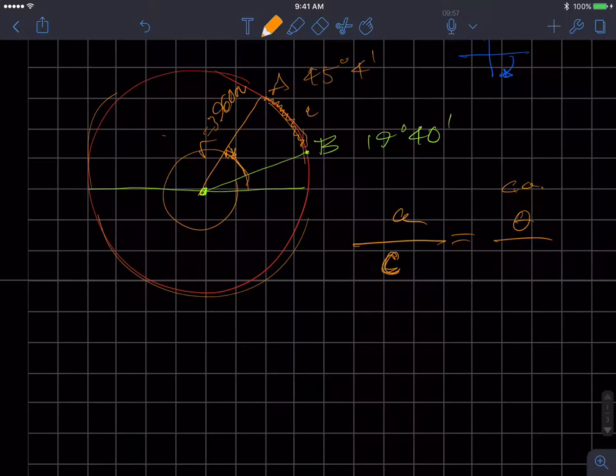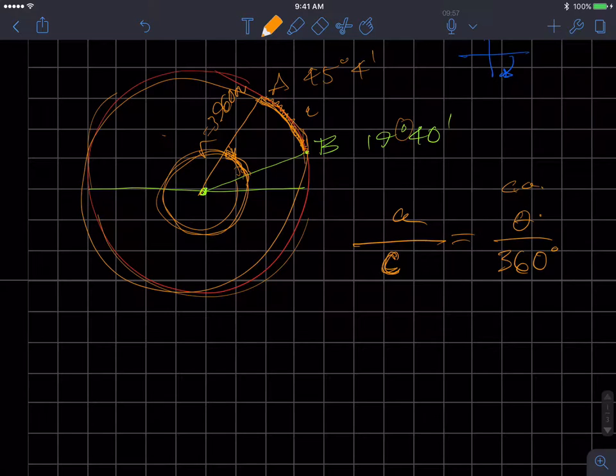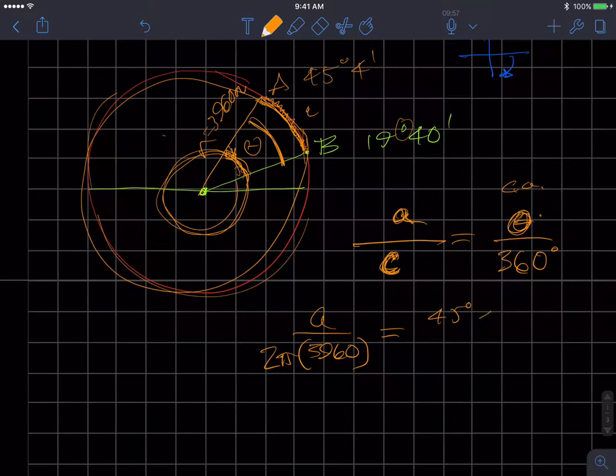A is some part all the way around the Earth, the circumference, is equal to the angle measure traveled, theta, divided by all the way around. In this problem, because they're giving us degrees, I would just use 360 degrees. So some angular distance traveled divided by all the way around, so part divided by whole, is equal to that same distance in length along a circumference. They should be proportional. So A is what I'm looking for. Circumference I can calculate, so that's 2 pi R, which is 2 pi times the radius of the Earth, 3960.